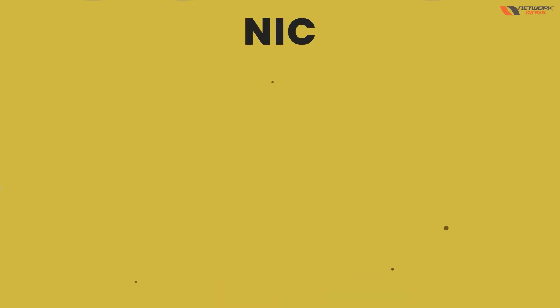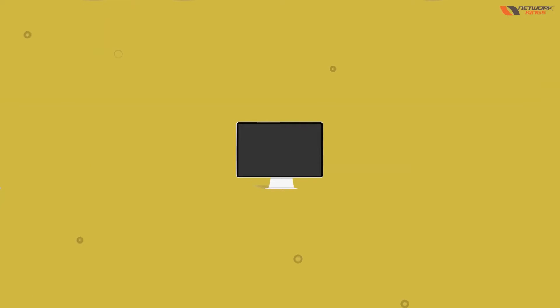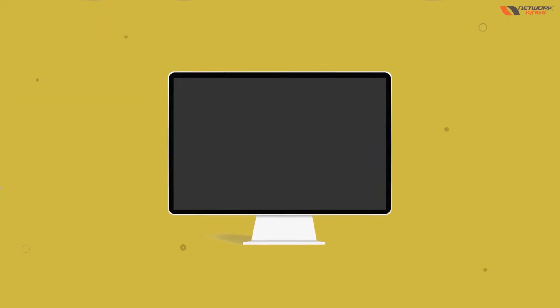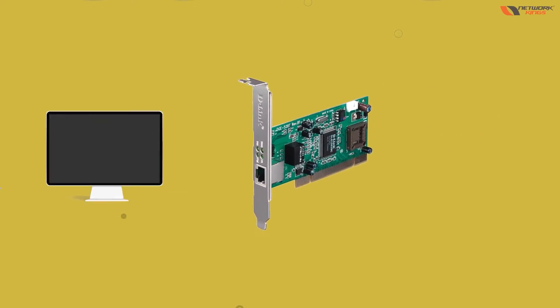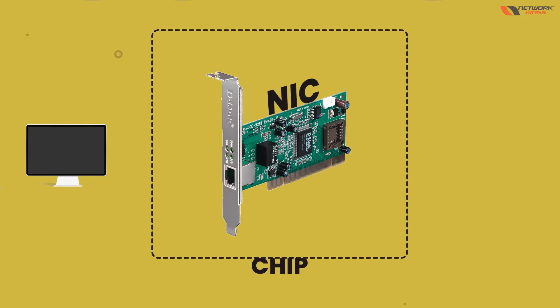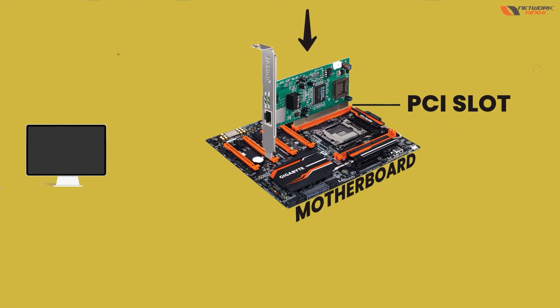So what is NIC? NIC is a chip called Network Interface Card. Long time back, 10 to 15 years ago, every computer required you to buy this NIC card separately, which we added into the PCI slots on the motherboard. It's a chip that you place into the PCI slot — this is very old technology from 10 to 15 years back.